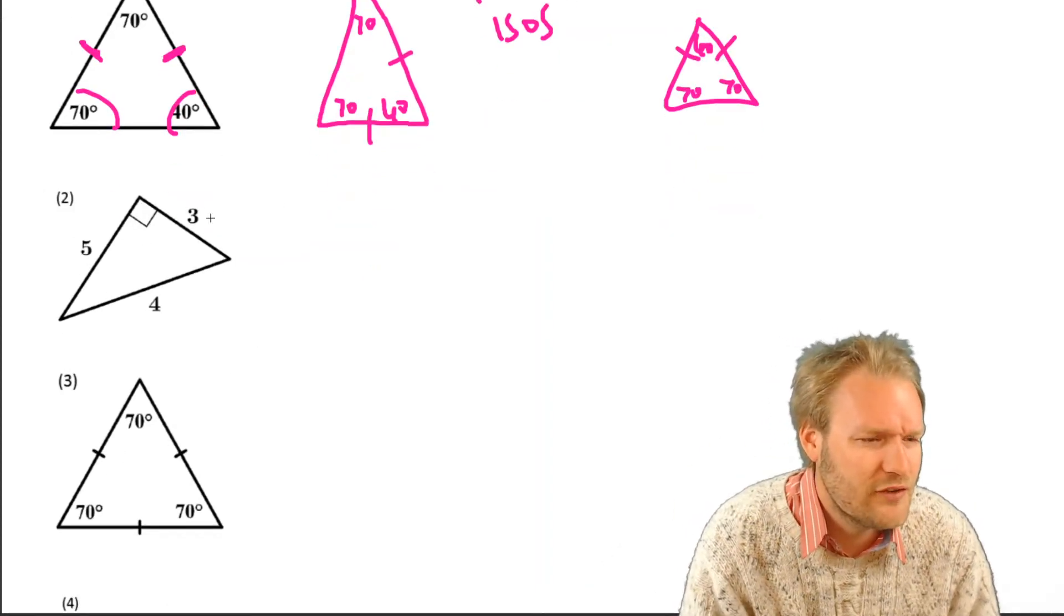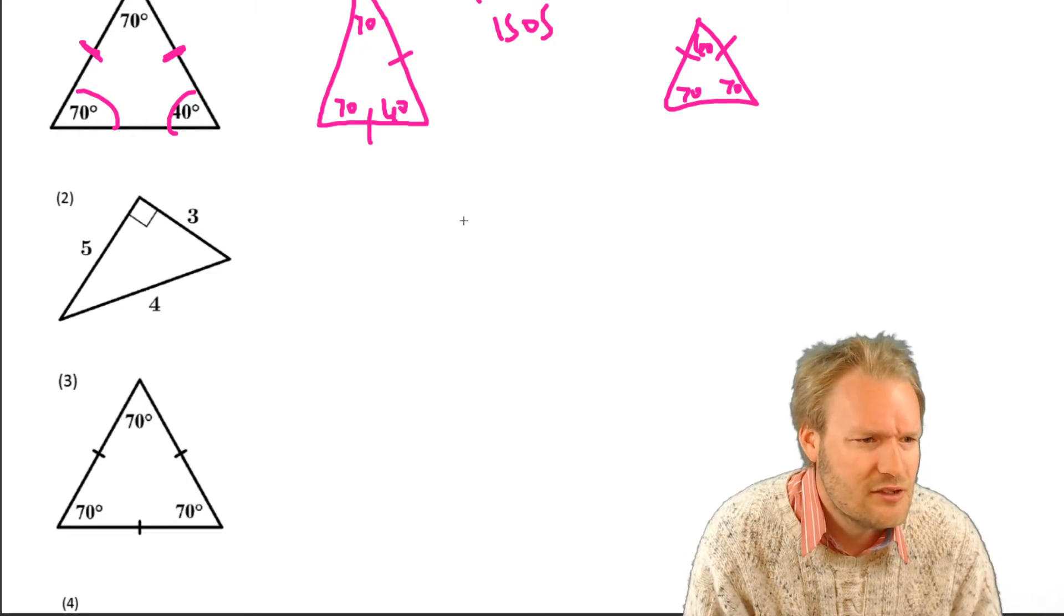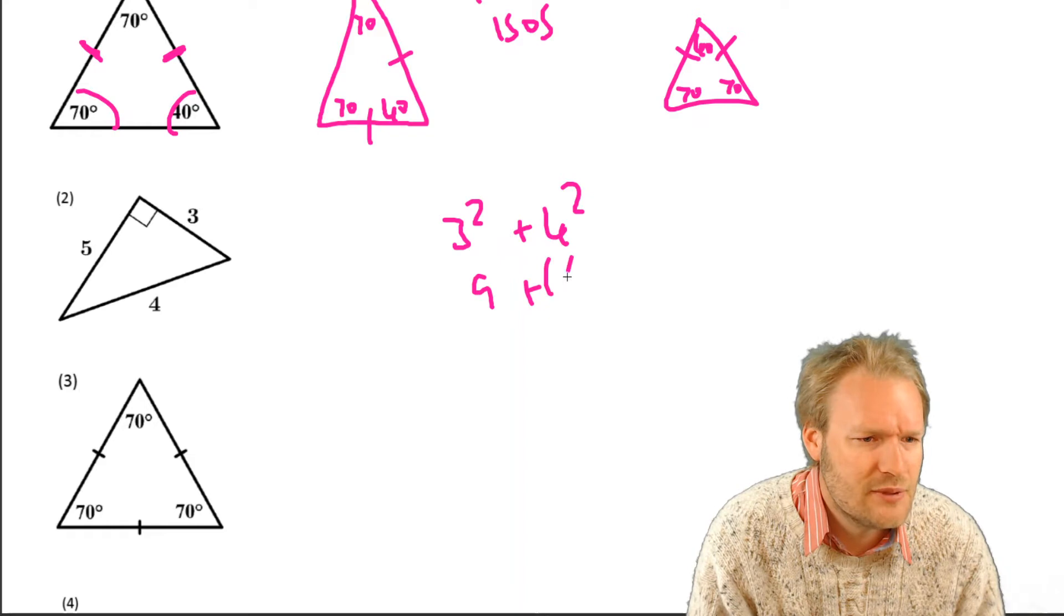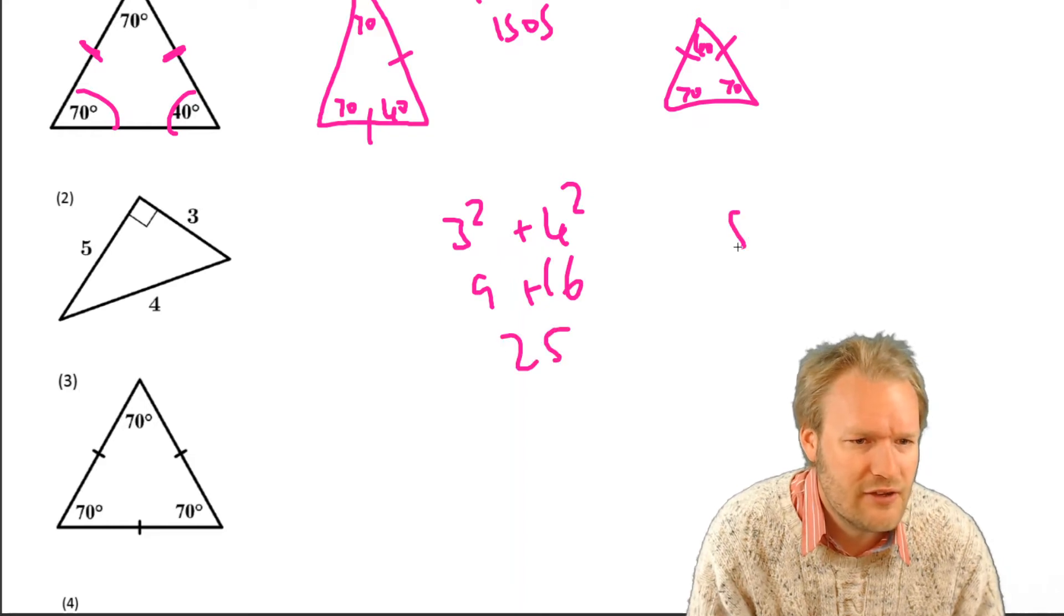Okay, right angle, triangle, 3, 4, 5. 3 squared is 9. So it seems good. 3 squared plus 4 squared. 9 plus 16, 25. 5 squared, 25. So yeah, when you square.